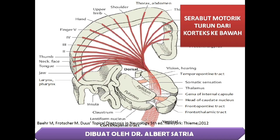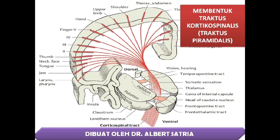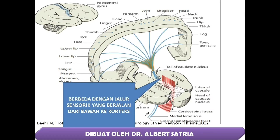Serabut motorik berjalan turun dari Cortex ke bawah, membentuk Traktus Corticospinalis atau yang disebut dengan Traktus Pyramidalis. Berbeda dengan jalur sensorik yang berjalan dari bawah ke Cortex.